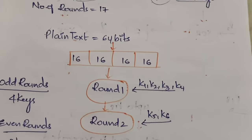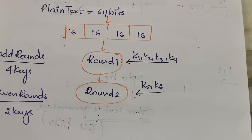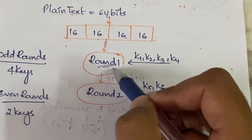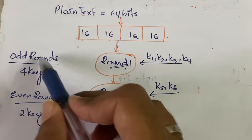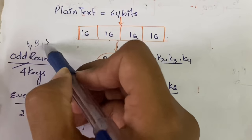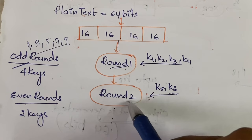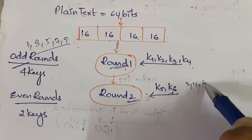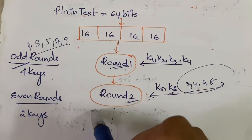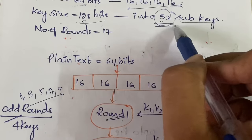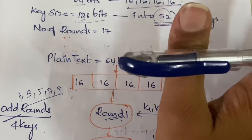The plain text is divided into four 16-bit parts: 16, 16, 16, and 16 — totaling 64 bits. This is sent into round one. For all odd rounds — rounds 1, 3, 5, 7, 9, and so on — you will have four keys. For all even rounds — rounds 2, 4, 6, 8 — you will have only two keys. In this way, the total requirement comes to 52 keys, which is why the 128-bit key is divided into 52 sub-keys.